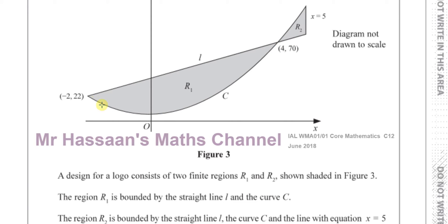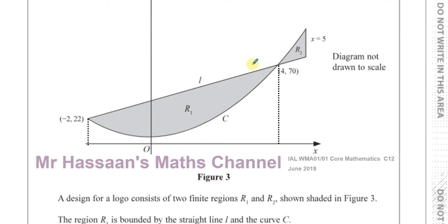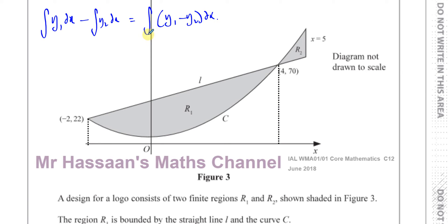If you take away the area under the curve from the area of the whole section, you get the area required. What I'm going to do first is take the equation of the line and subtract from it the equation of the curve, and then integrate that result between these points, because the line is above the curve. I could integrate y1 and y2 separately, or I could integrate y1 minus y2 with respect to x and get the answer straight away.